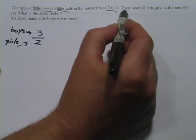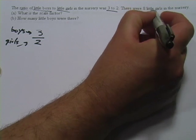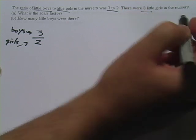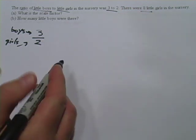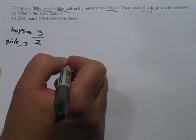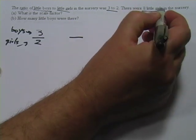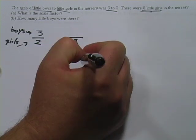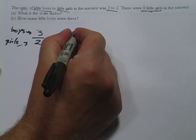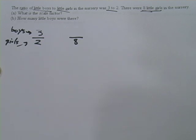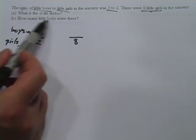Now the next piece of information we're given is that there were 8 little girls in the nursery. So what I'm going to do is make another ratio here, except I'm going to leave part of it blank. On the bottom, because I've got girls here, 8 little girls, and girls go on the bottom, I'm going to put that 8. And on the top, I don't know, so I'm going to leave that blank. That's one of the things we're looking for: how many little boys were there.